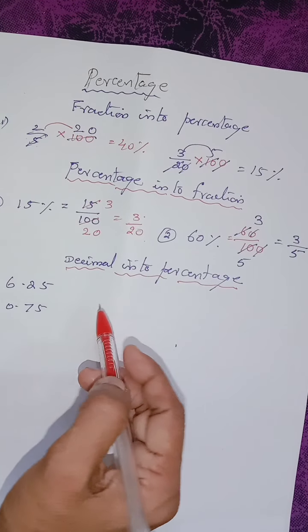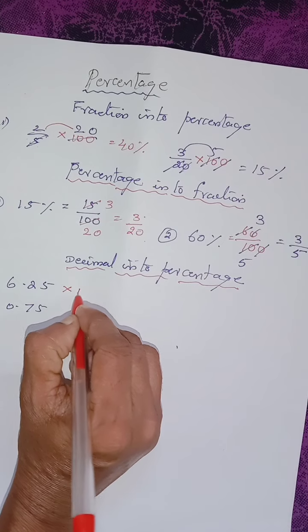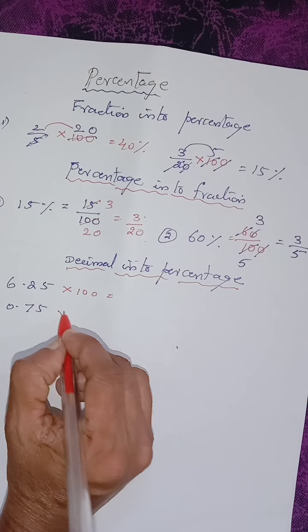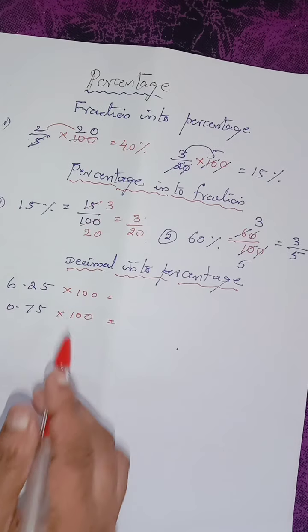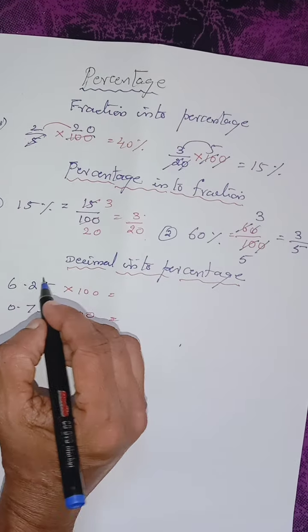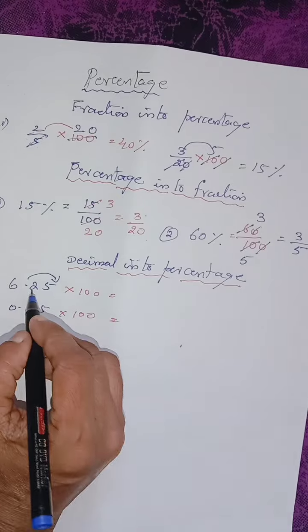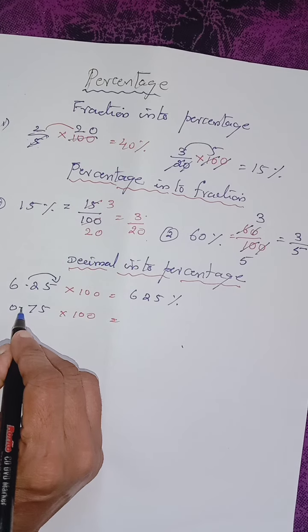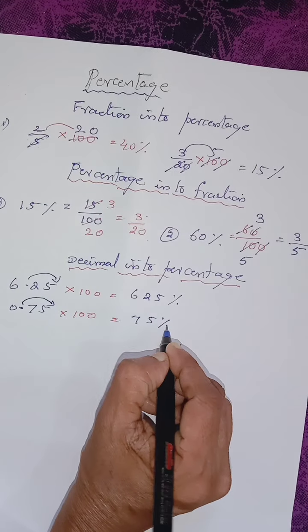Now let us see how to change the decimal into percentage. Just multiply with 100. When you see a decimal number and there are two zeros in 100, you should move the decimal point two numbers to the right side, because we are multiplying with 100. So we can write 6.25 as 625 percentage. Then how can we write 0.75? 0.75 has two numbers after the decimal, so we can simply write 75 percentage.